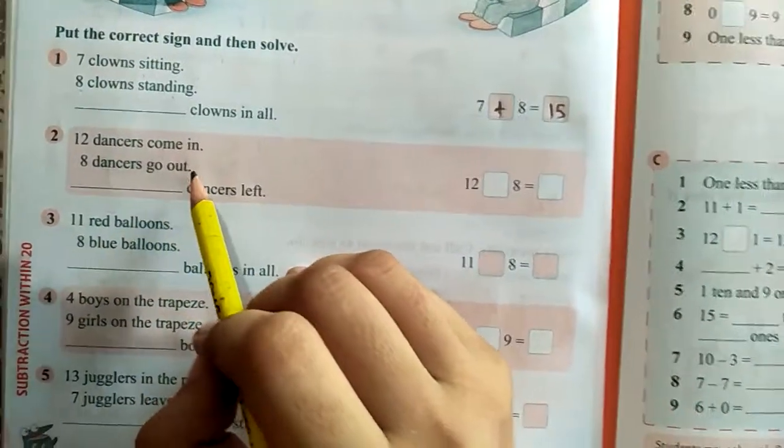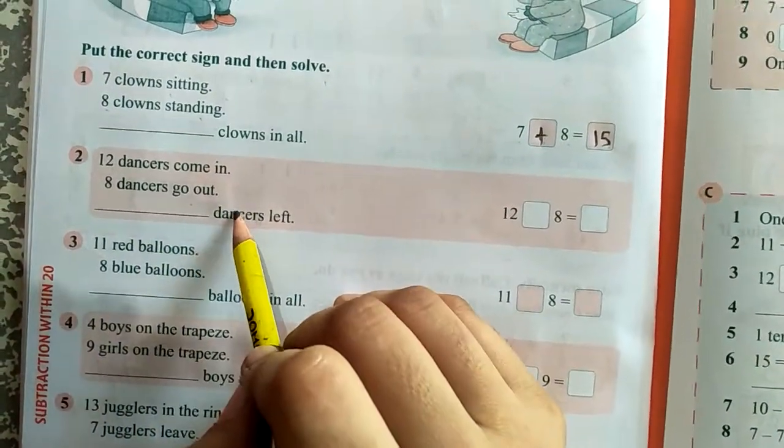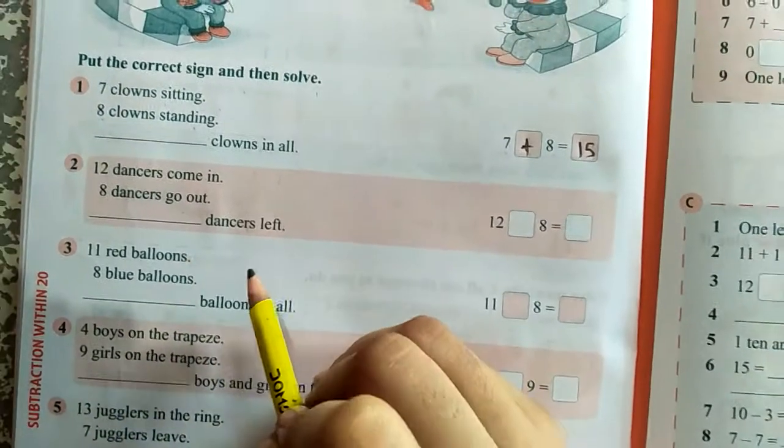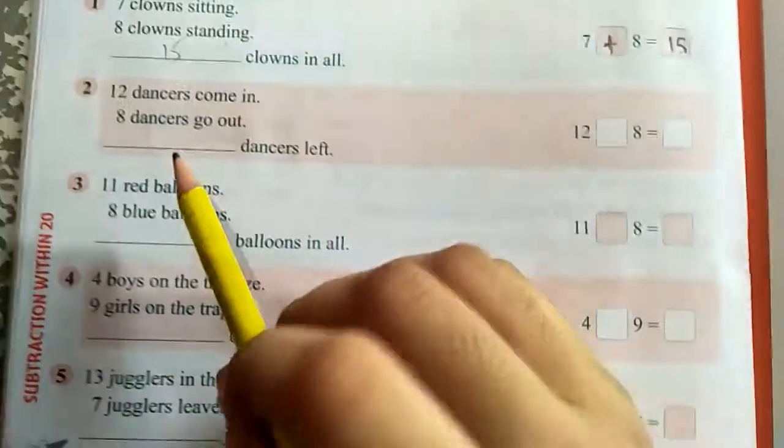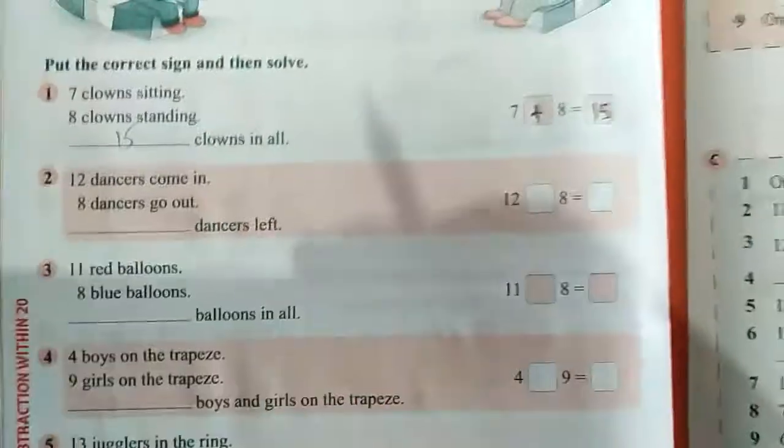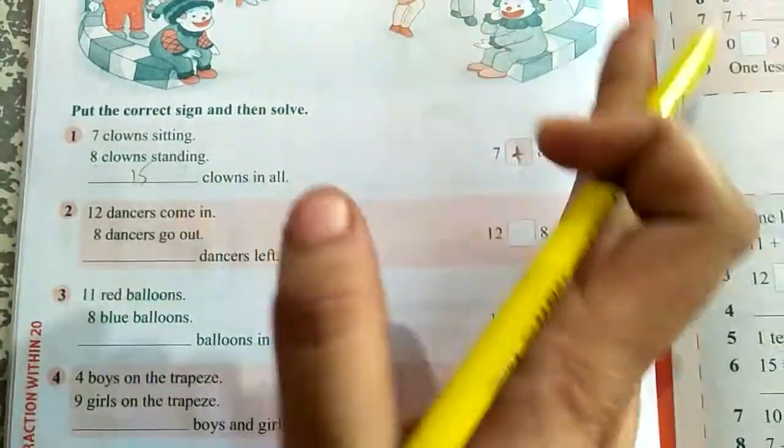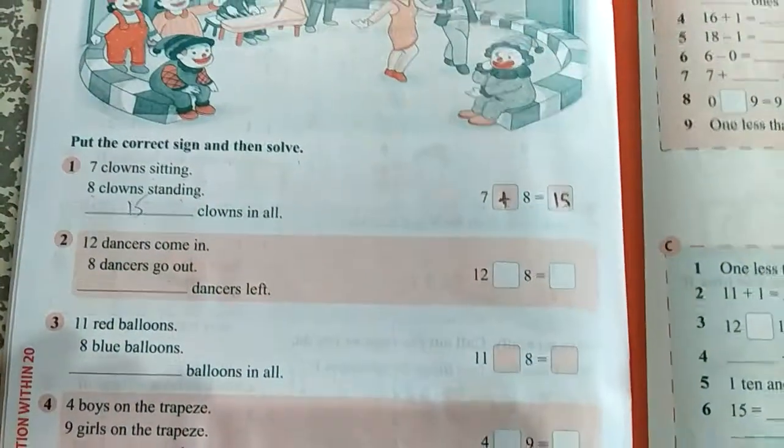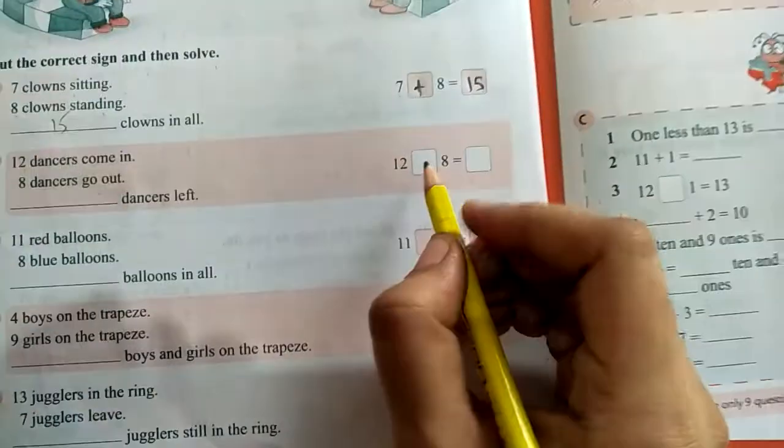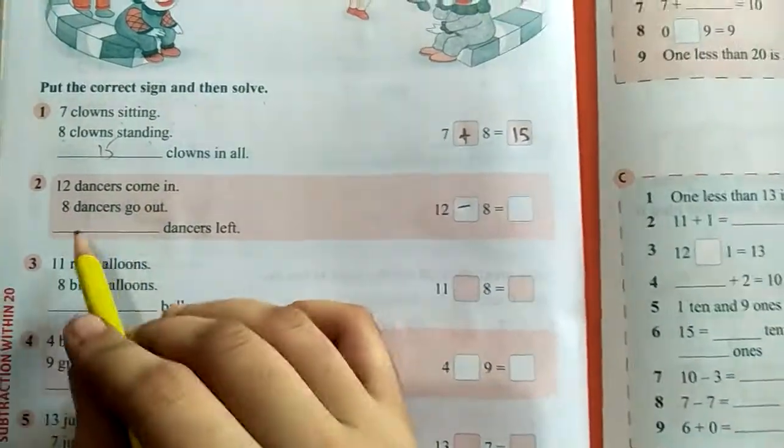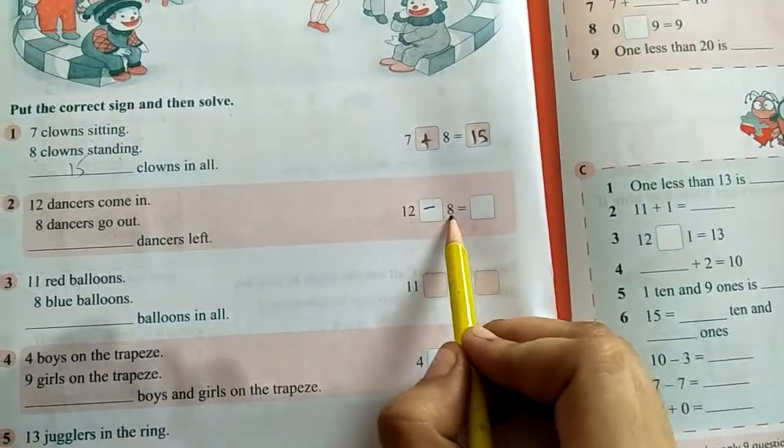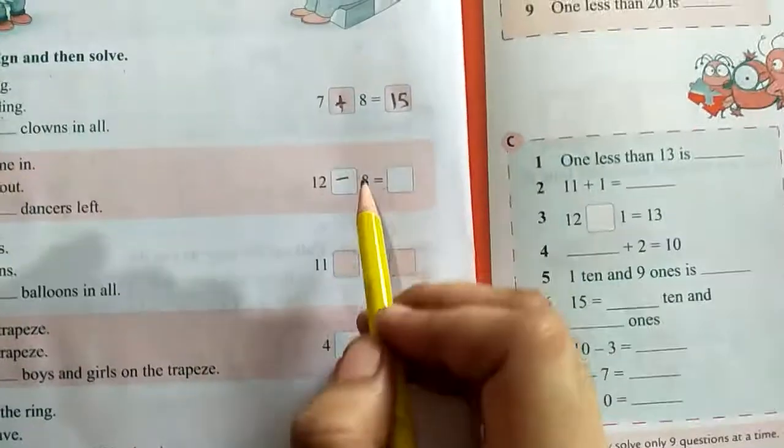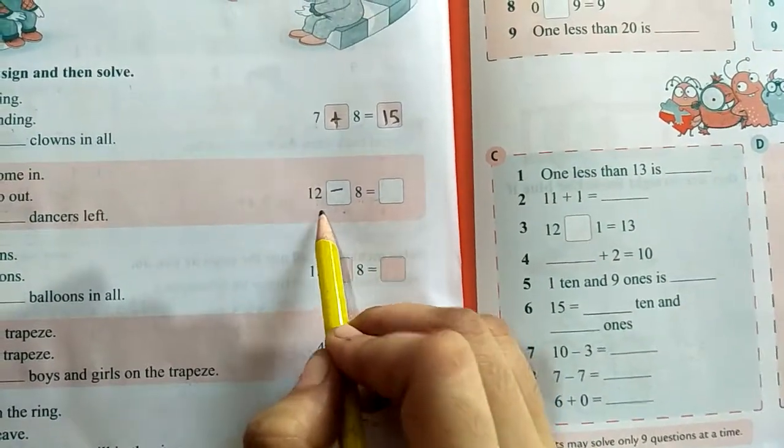12 dancers come in, 8 dancers go out. How many dancers left? So here you have to write the right answer. 12 dancers are there, from that 8 dancers go out. From 12, go out 8, so here minus will happen because some dancers are going out, they are removing. So 12 minus 8. What you can do? Counting backward or forward: 8, 9, 10, 11, 12. 4 is the answer.